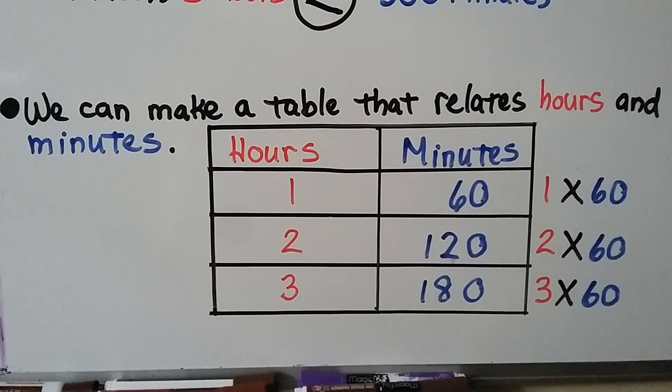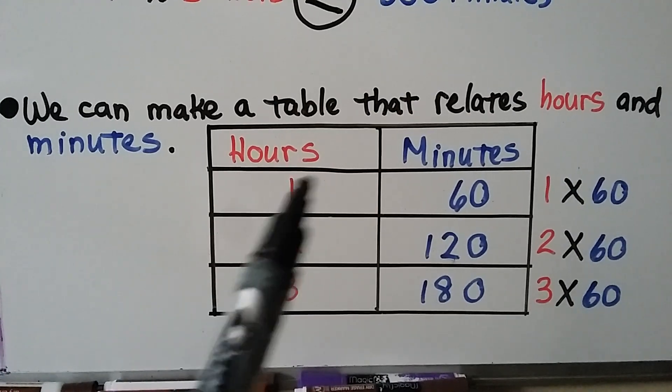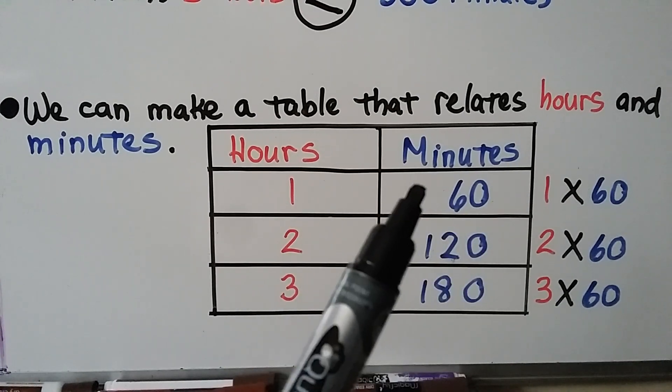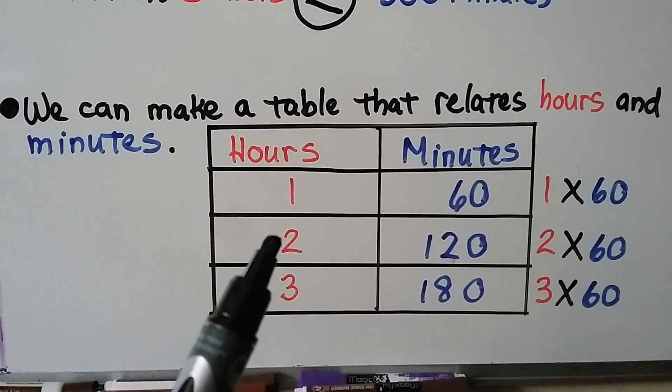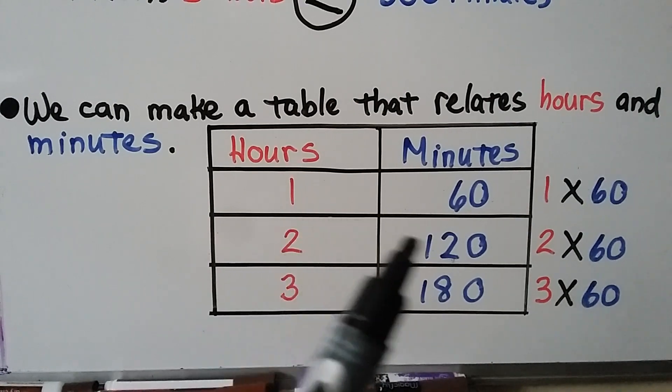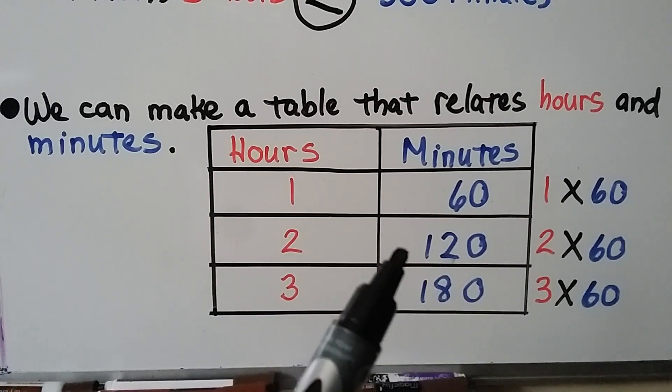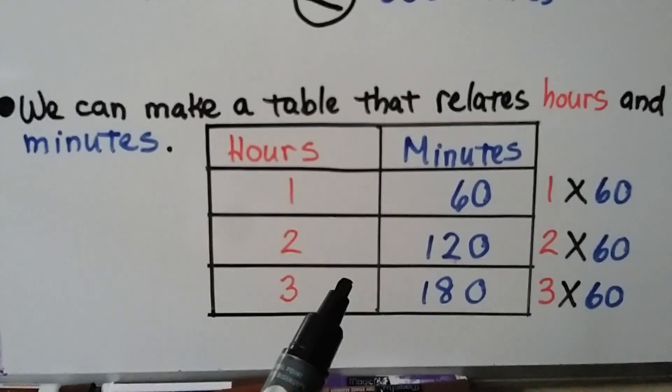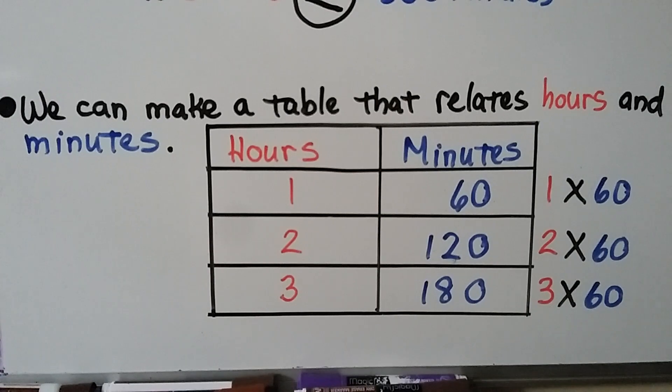We can also make a table that relates hours and minutes. We know 1 hour is equal to 60 minutes. That's 1 times 60. So 2 hours would be 2 60s. We would do 2 times 60. That would be equal to 120 minutes. And 3 hours would be 3 60s, 3 times 60. That would be 180 minutes. And we could make our table longer, couldn't we?